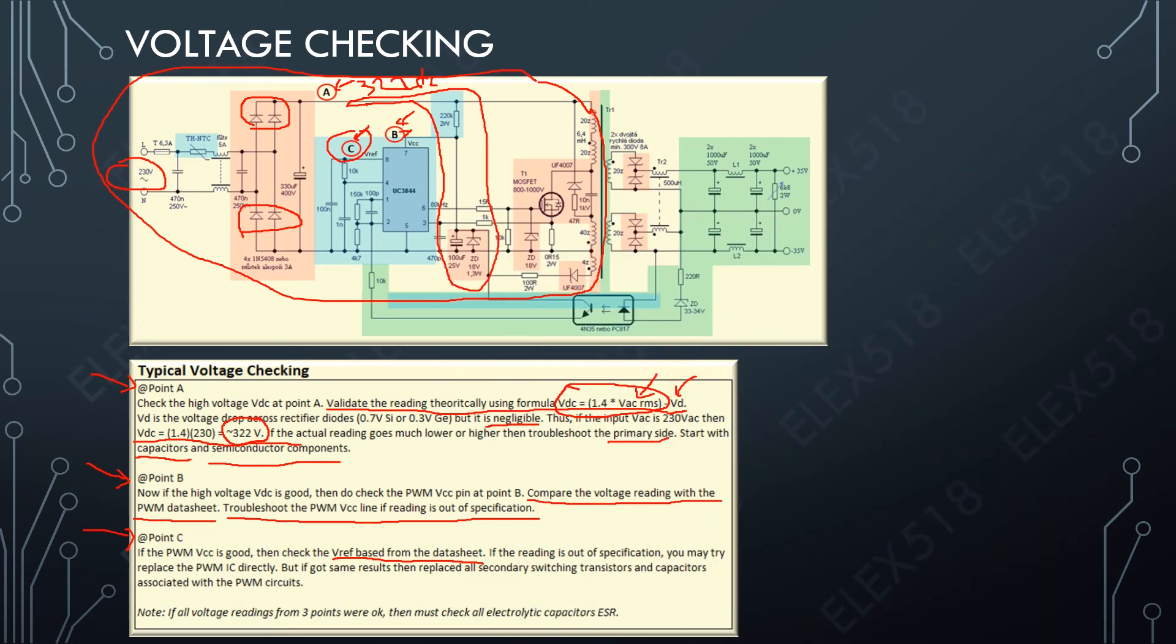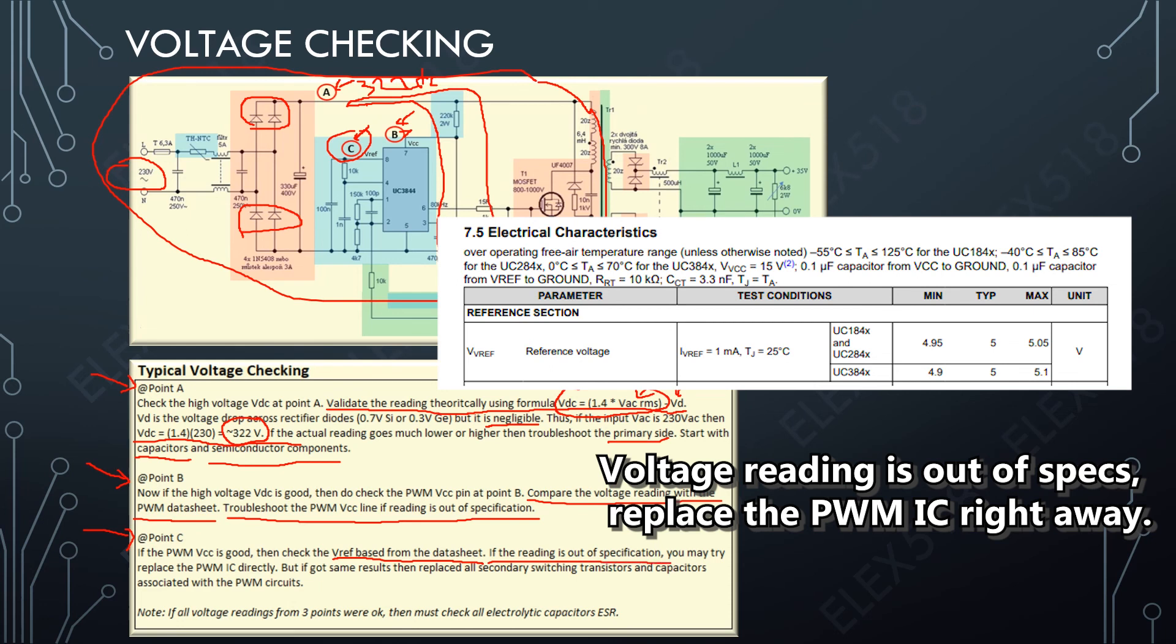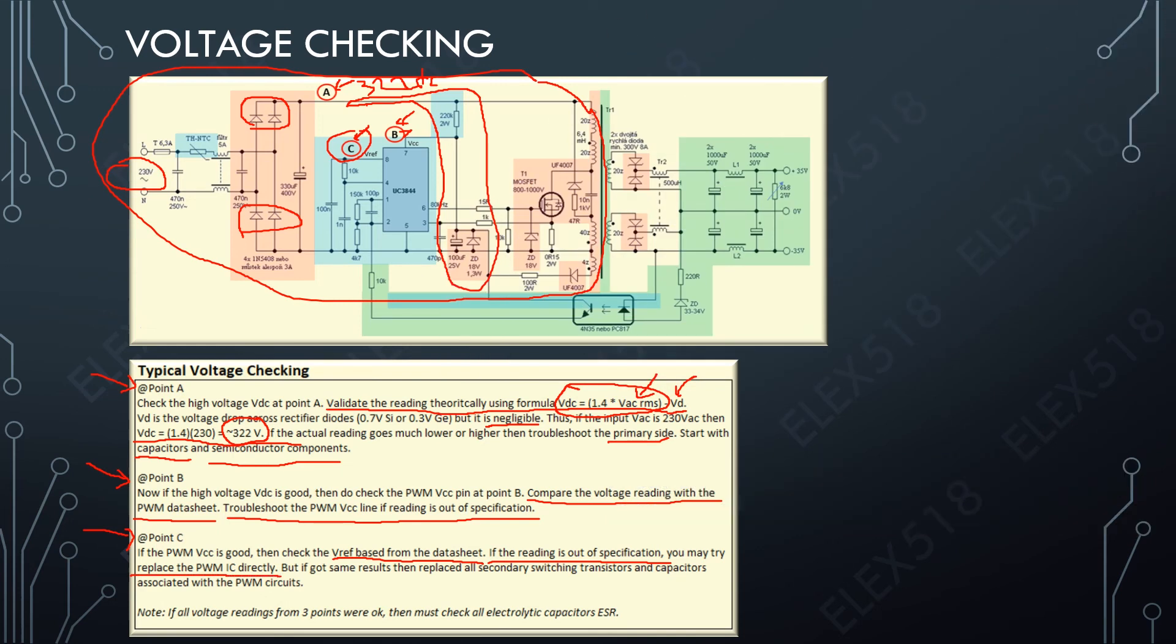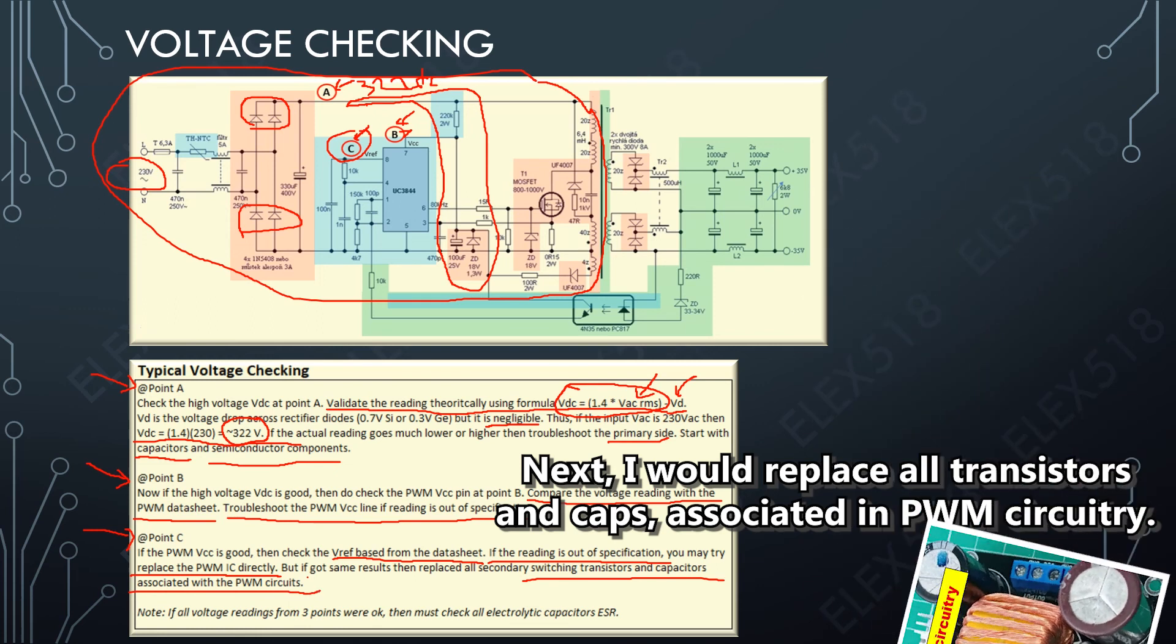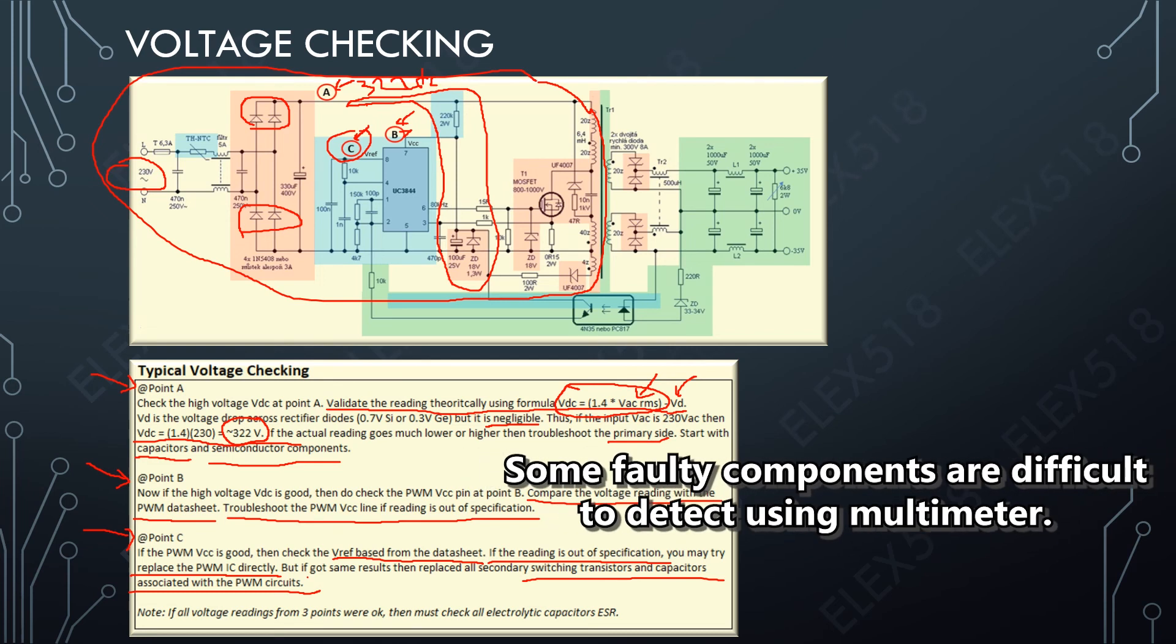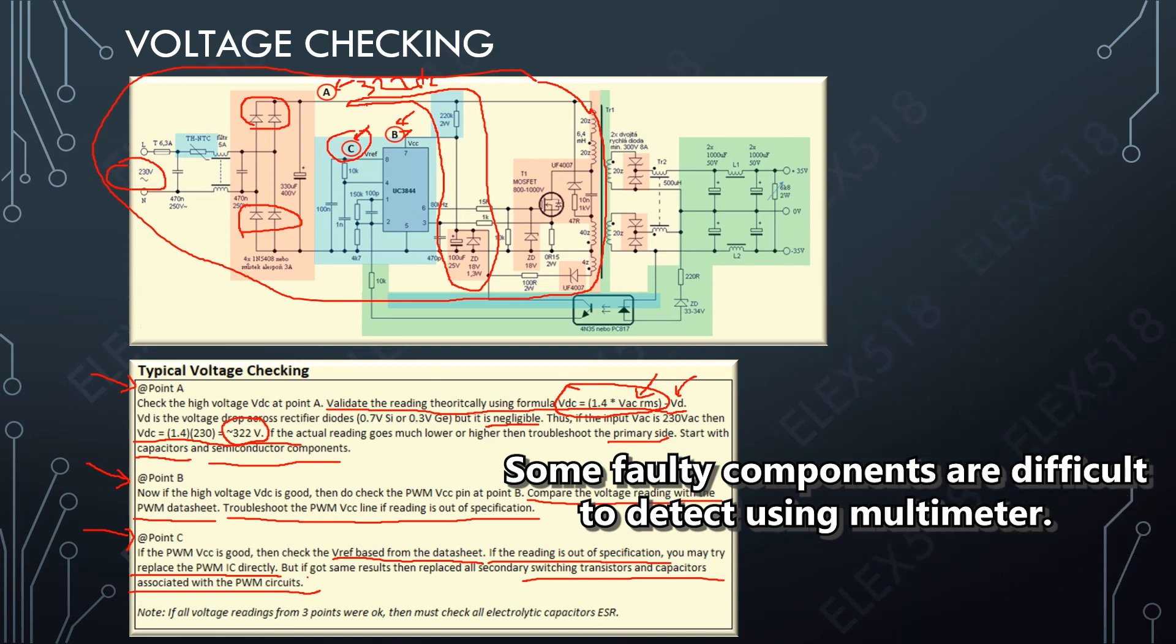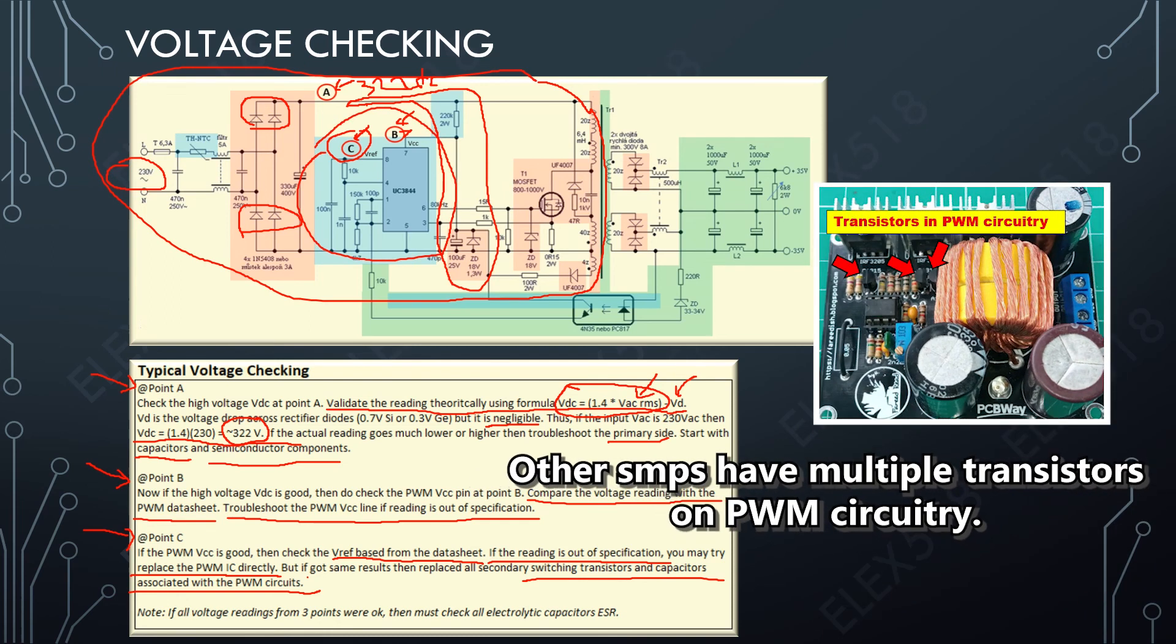Each PWM IC has VREF information on its datasheet. Let's say the reading is out of specs. For me, I would directly replace first the PWM IC, and if I got the same result, then I would directly replace all the switching transistors and capacitors associated with the PWM IC. Take note, these suggestions are based on our experience, because some of the components, especially transistors, based on our experience we cannot detect using the multimeter, so we will just directly replace those components. From this sample circuit we don't have transistors on the PWM circuitry, but you might see other SMPS power supplies having multiple transistors composed in the PWM circuitry.